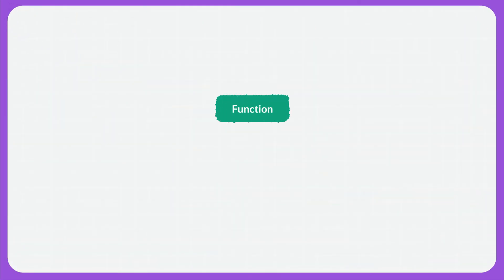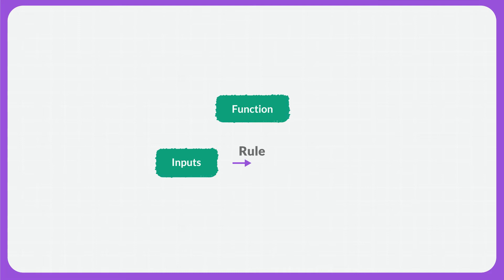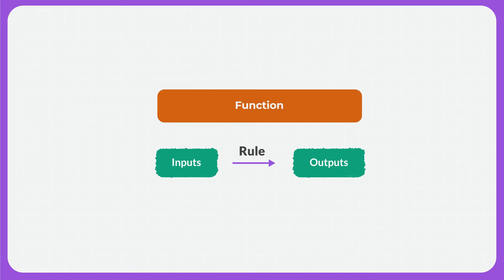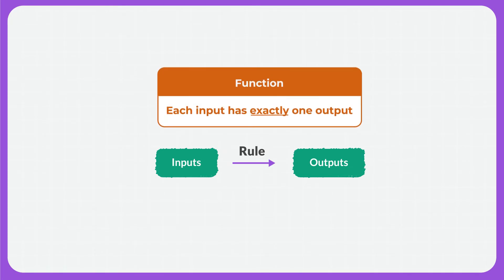A function is a special relationship between two sets of information. The first set of information is made up of inputs. An input is the information we already know. A function always has a rule that the inputs follow. After the rule is applied to the inputs, the result is called the output. These outputs are the second set of information. For the relationship to be considered a function, each input must have exactly one output.